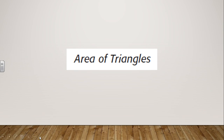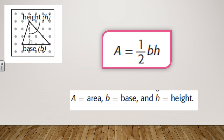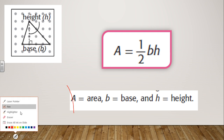Hello my dear students, today we will talk about area of triangles. This line represents the base of a triangle and that line represents the height. The area of a triangle equals half times base times height, where A represents area.